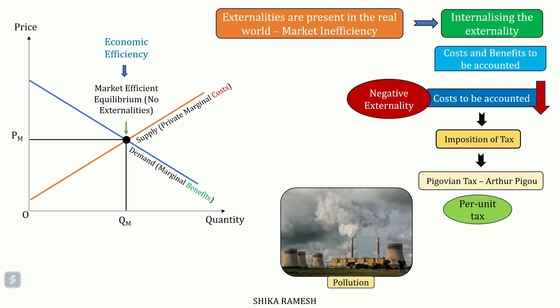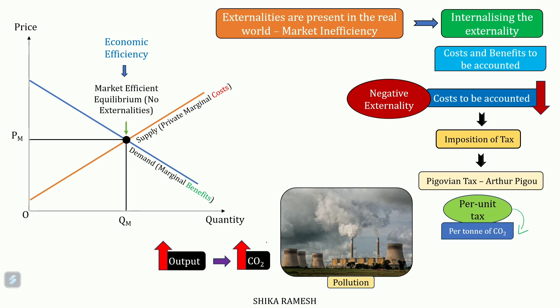For example, production of any product by industries emits heavy amounts of carbon dioxide into the atmosphere. So a Pigouvian tax will be imposed on the firms for each tonne of carbon dioxide emitted. Thus, if more output is produced, more carbon dioxide will be emitted and hence more tax will have to be paid by the firms. In this way, the cost of damages created by causing pollution is internalized through taxation, thereby forcing firms to decrease the generation of such negative externalities.